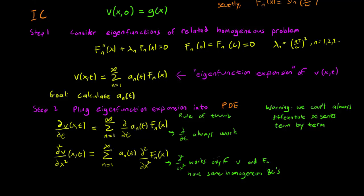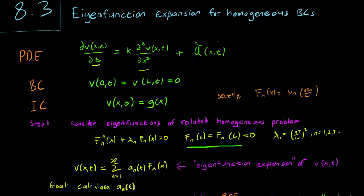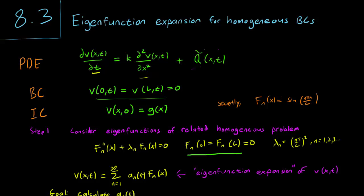And the x-derivative part works only if V and your F_n have the same boundary conditions, and that the boundary conditions are all homogeneous. And this works because we know that we have these boundary conditions for F_n, which are the same as our boundary conditions for V.